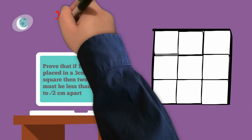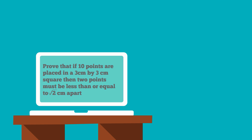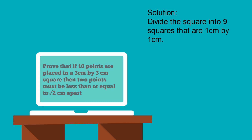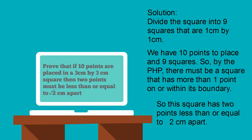We've got 10 points and 9 squares — it's got a real pigeonhole principle feel to it. So let's try that with the solution. Divide the square into 9 squares that are 1cm by 1cm. We have 10 points to place and 9 squares, so by the pigeonhole principle, there must be a square that has more than one point on or within its boundary. Therefore, this square has two points less than or equal to the square root of 2cm apart.